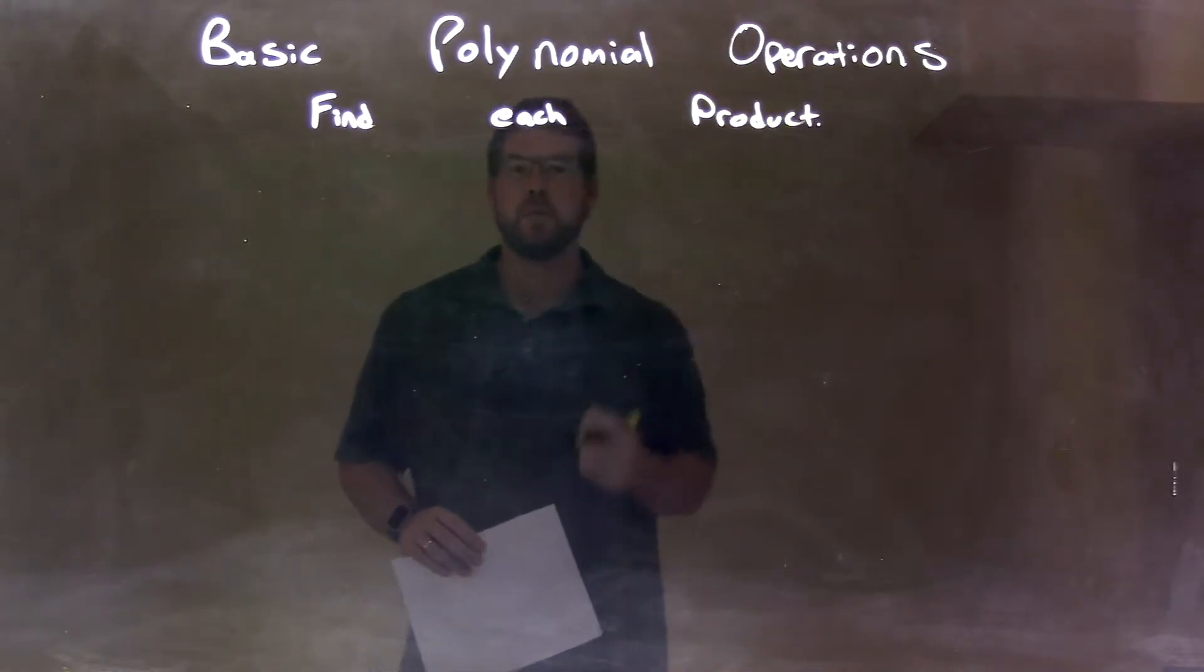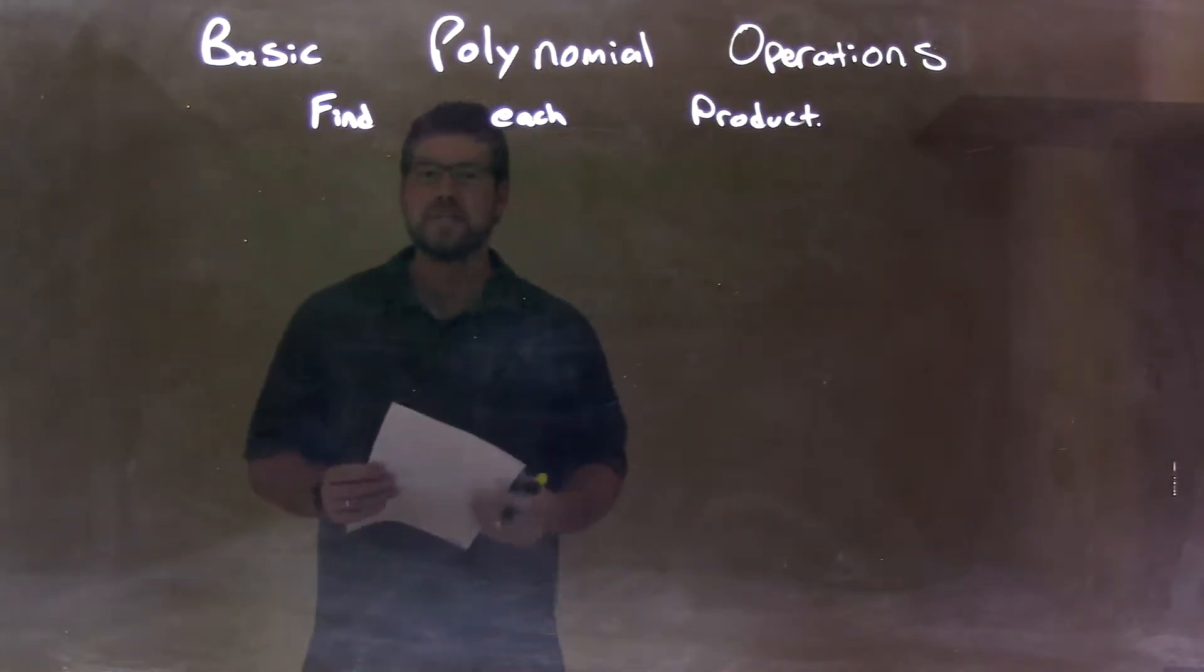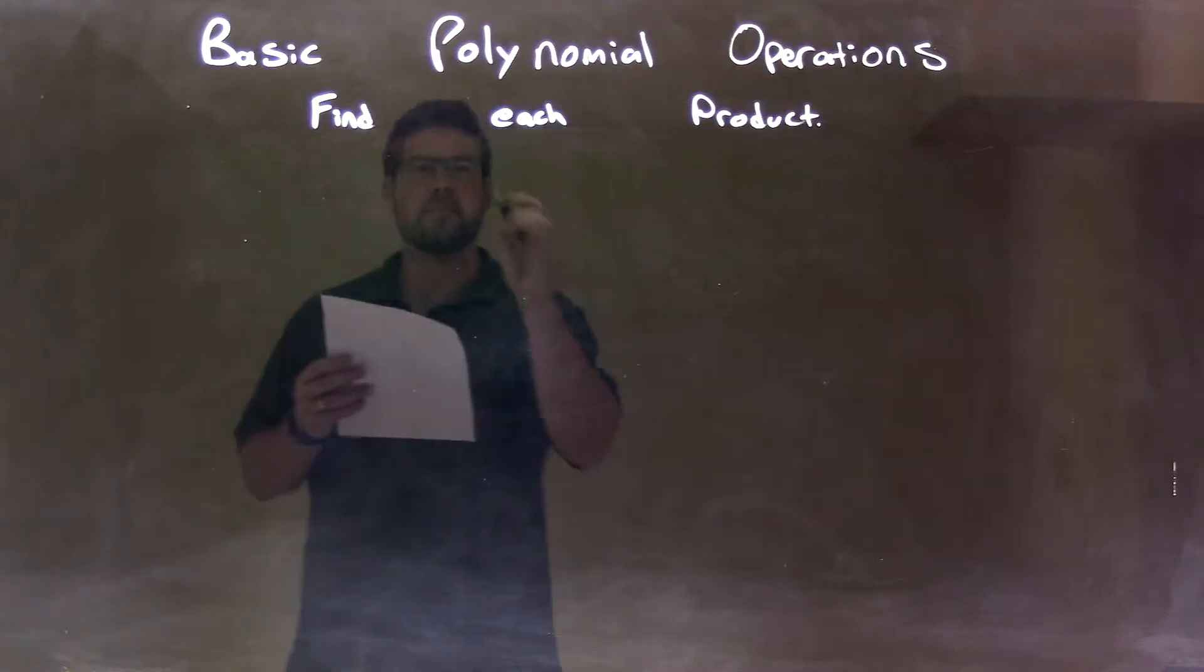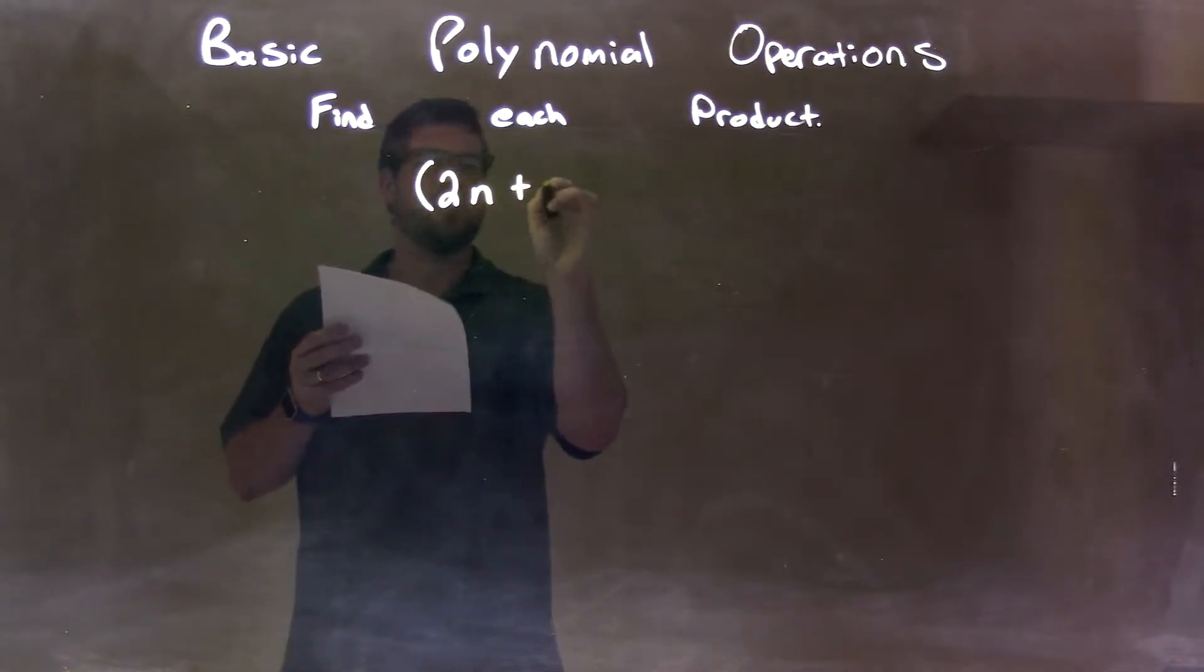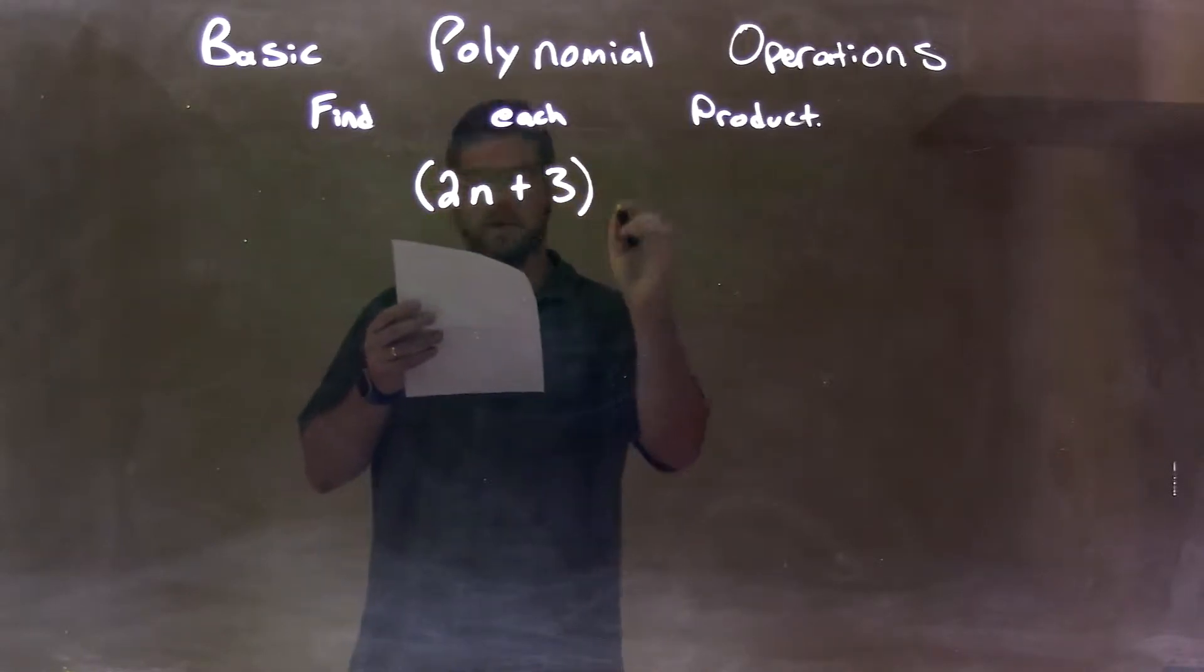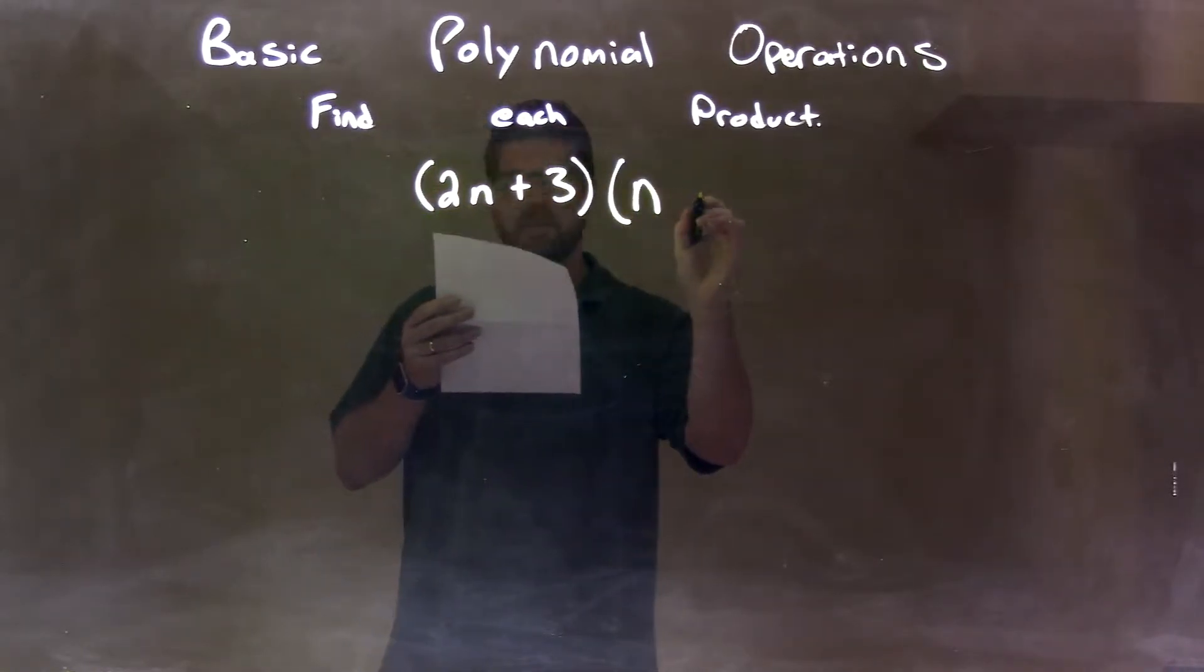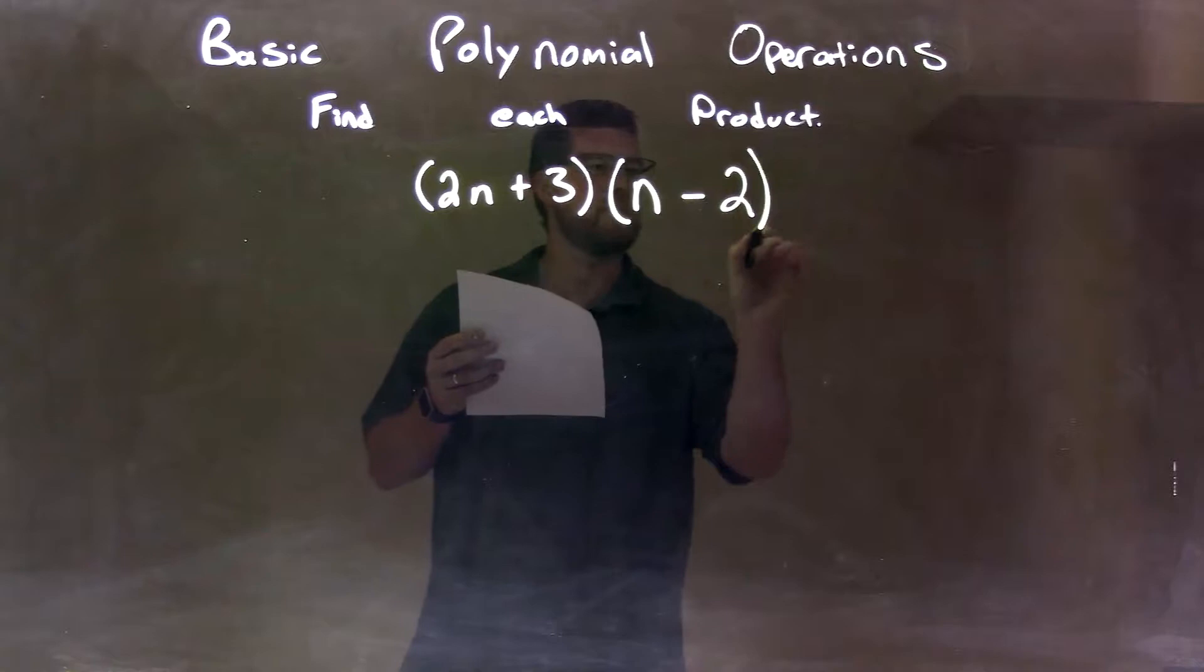We're going to find each product. So if I was given this product, 2n plus 3 times n minus 2.